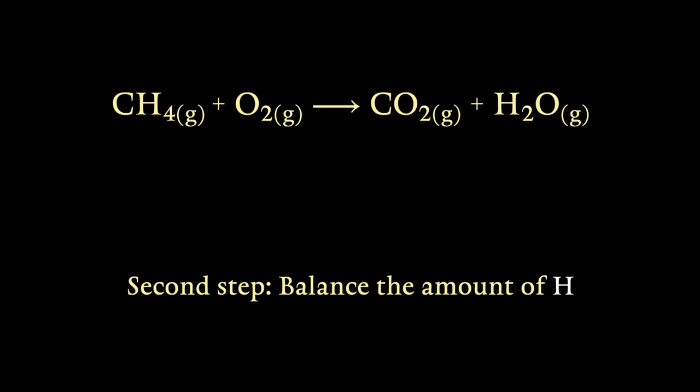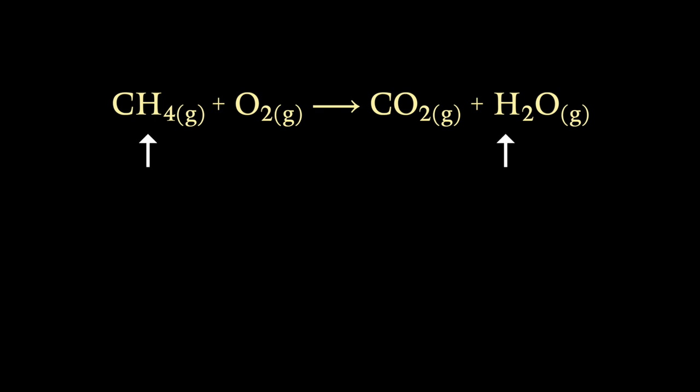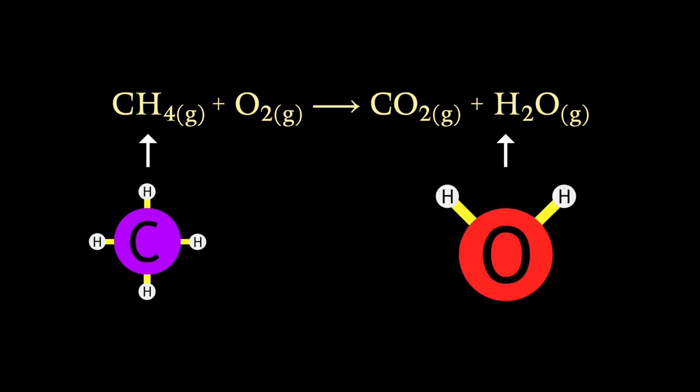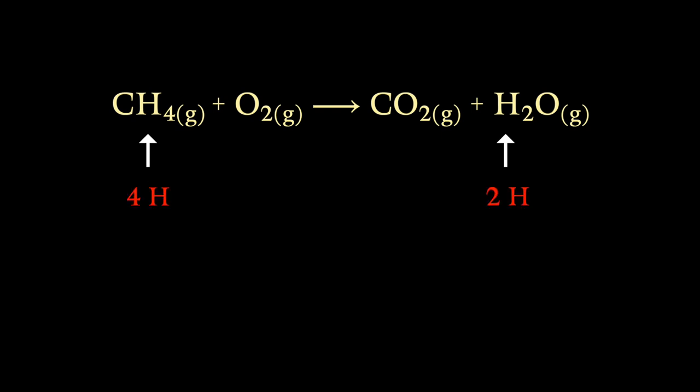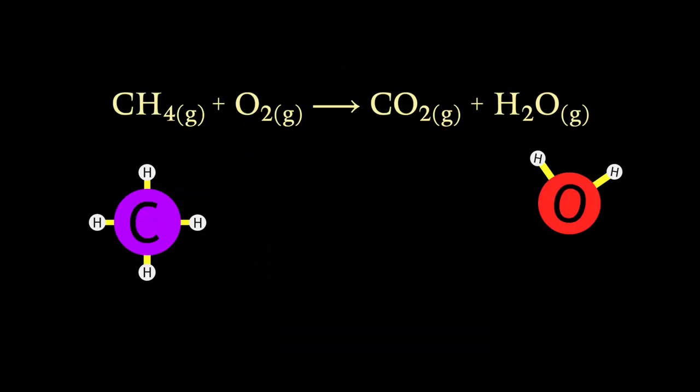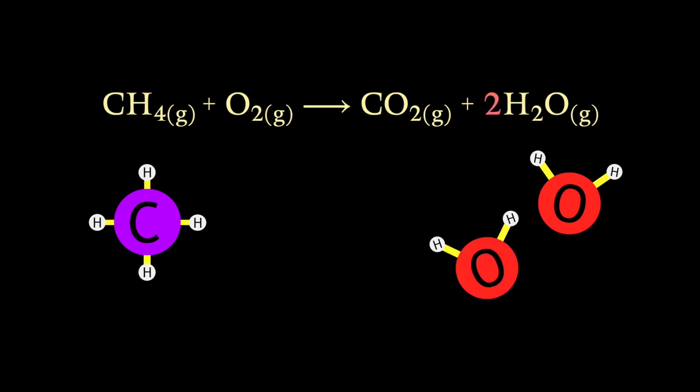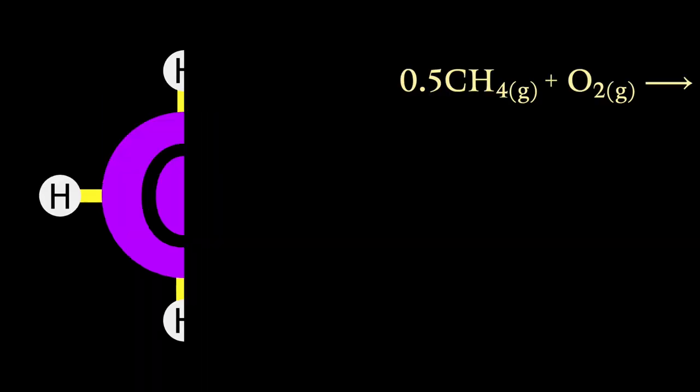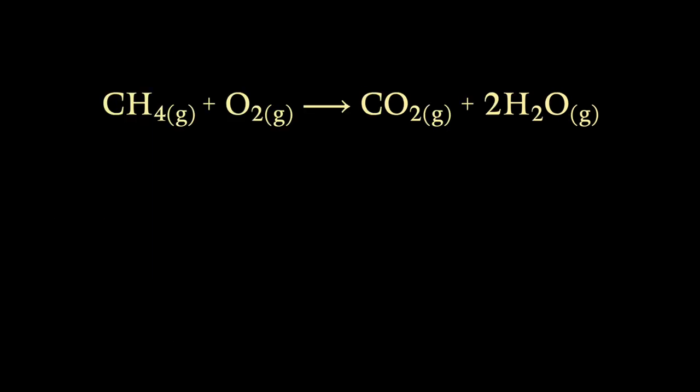Next, we should consider the compounds containing hydrogen, because, again, there is only one such compound on each side. There are four hydrogen atoms on the left side, bound in this methane molecule. On the right side, we currently have two hydrogen atoms bound in the water molecule. That means the left side contains twice as much hydrogen as the right side. What do you think we should do to balance them out? If you said double the amount of water produced, it's a gold star for you. In order to keep the amount of hydrogen balanced during this reaction, we need to produce two water molecules for every one molecule of methane. Technically, we could also halve the amount of methane, but that would put a half here, and it's much nicer to work with whole numbers instead.